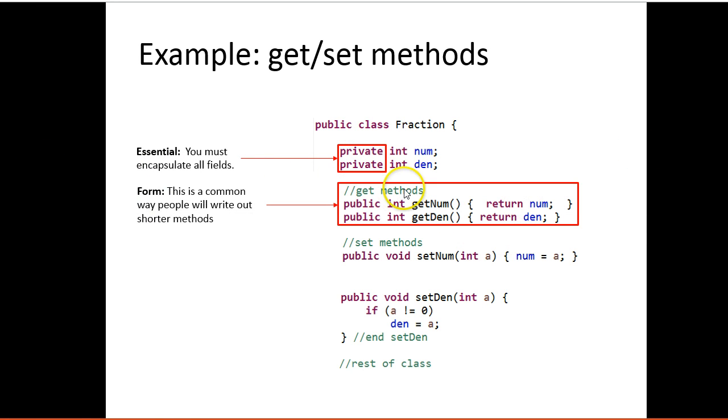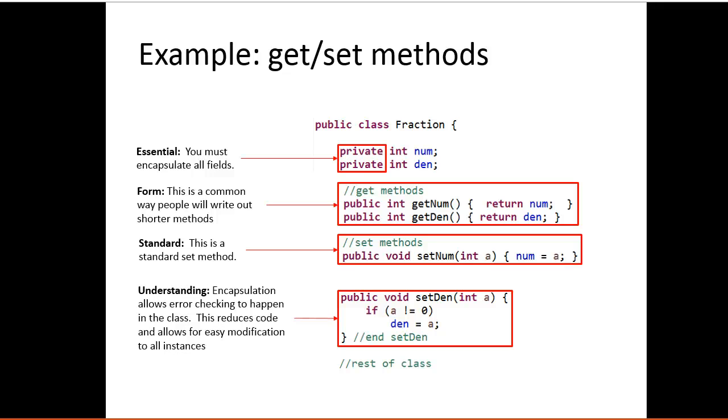This is a common way people will write out shorter methods. So they'll do it all in one line. This is used to save space. This is a standard practice. So remember our standard practice is all accessor methods are get something. All mutator methods are set something.